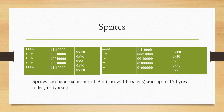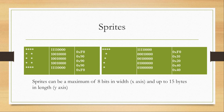Sprites can be a maximum of 8 bits in width — hence 8 bits in a byte — and up to 15 bytes in length, which represents the y-axis rows. We know the length of a sprite because there is a draw instruction in the Chip 8 instruction set where we specify how many rows to draw.